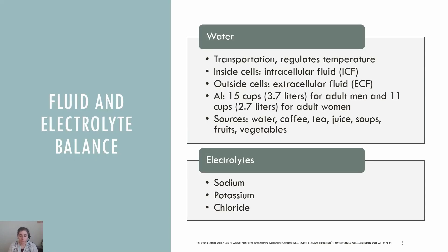We are going to start with the micronutrients involved in fluid and electrolyte balance. Before we get to that, we need to discuss water. Water is the most critical of all the nutrients as we need water for transportation, as a medium for chemical reactions, as a temperature regulator, and for fluid balance. Water is the largest component of the human body and many physiological functions depend on water. In the human body, water is distributed into two compartments: inside cells called intracellular fluid and outside cells called extracellular fluid.